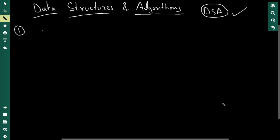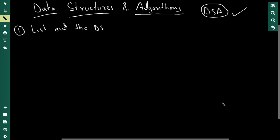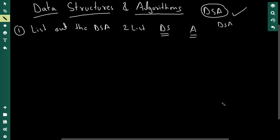The first step is to get a list of the data structures and algorithms that you're going to learn. You're going to make two lists — one for data structures and one for algorithms. To find these lists, just Google 'DSA complete list' or go on Geeks for Geeks, which is an amazing website. It has a list of data structures and a list of algorithms which are important. So create your own two lists.